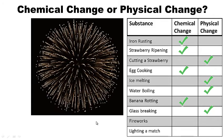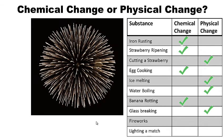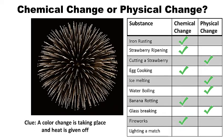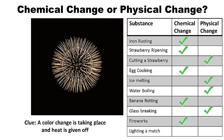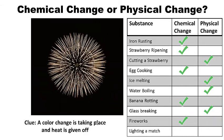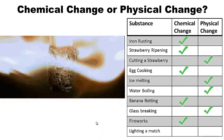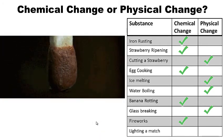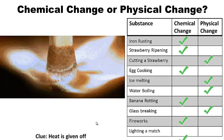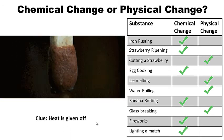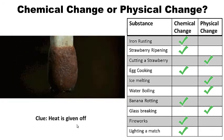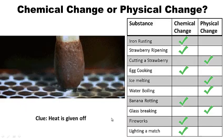A banana rotting is a chemical change — the banana is reacting with oxygen in the air and new chemicals are forming as it rots; the color change is the clue. Glass breaking is a physical change — it's still glass even after it's broken, just a change in shape. Fireworks are a chemical change — a color change is taking place, heat is given off, and new chemicals are forming. Lighting a match is also chemical — heat is given off and new chemicals are forming.